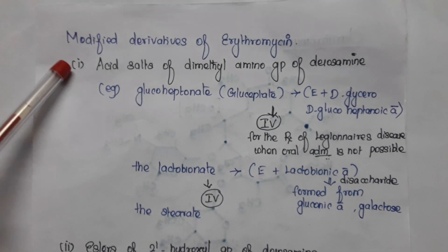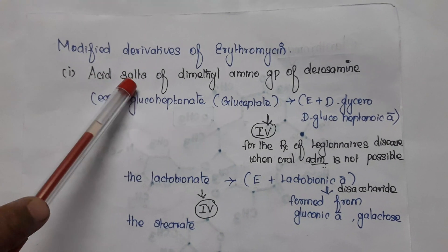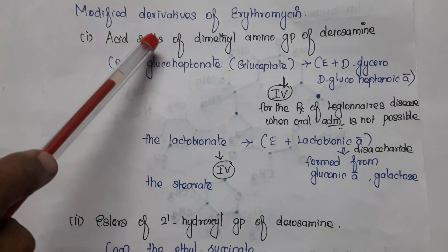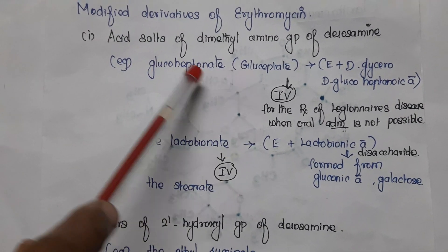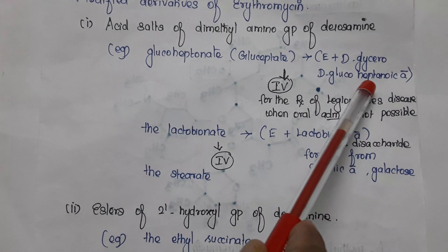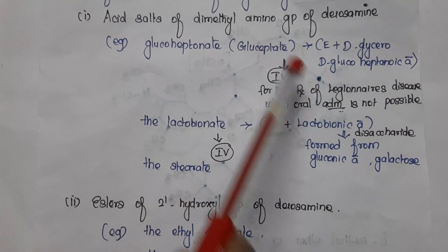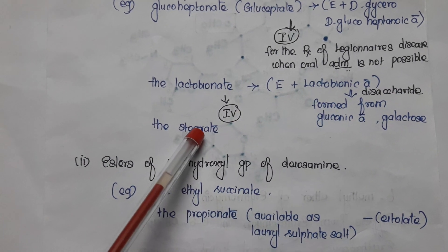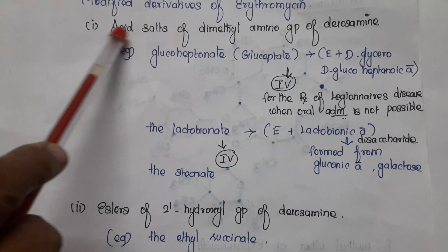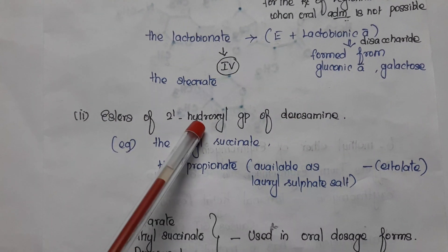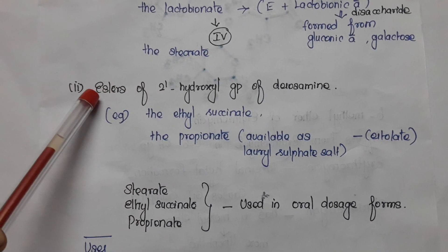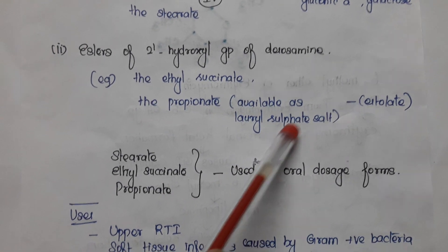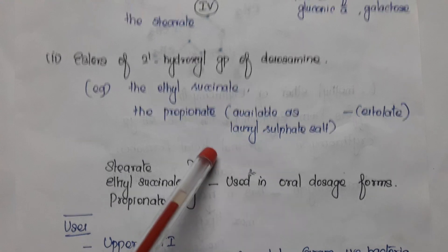Modified derivatives of erythromycin include: first, salts formed from the dimethylamino group in desosamine — desosamine has a dimethylamino group that is converted to salts. The acids used are glucoheptanoic acid giving glucoheptonate (gluceptate), lactobionic acid giving lactobionate, and stearic acid giving stearate. Second, esters — desosamine has a hydroxy group at the second portion that can be converted to ester. The esters obtained are ethylsuccinate, propionate, and lauryl sulfate salt (otherwise called estolate). Next class we will see the SAR of macrolides.